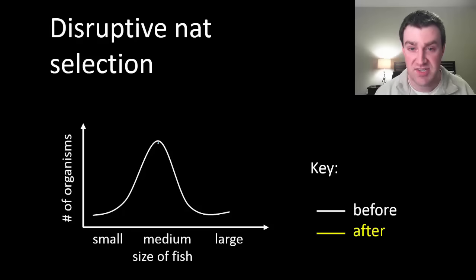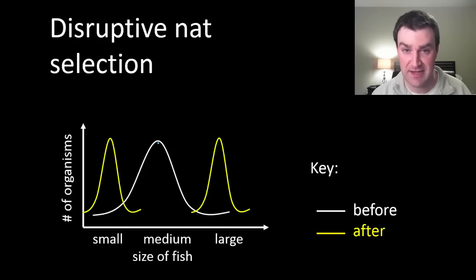Finally, disruptive natural selection is kind of an interesting case where both extremes survive better and the intermediate phenotype doesn't survive very well, and so you shift in both directions at the same time.